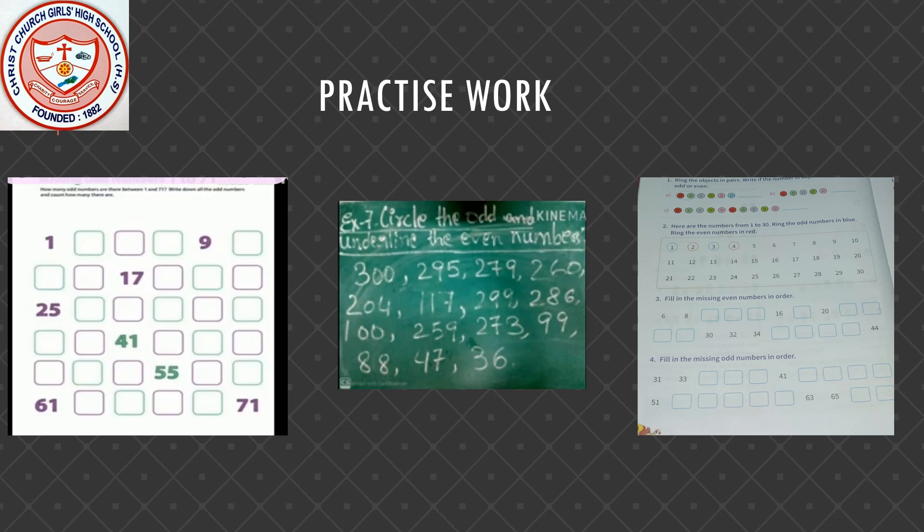Fill in the missing even numbers in order. The answers are: 6, 8, 10, 12, 14. 16 is already given. Then: 18, 20, 22, 24, 26, 28, 30, 32, 34, 36, 38, 40, 42, 44.